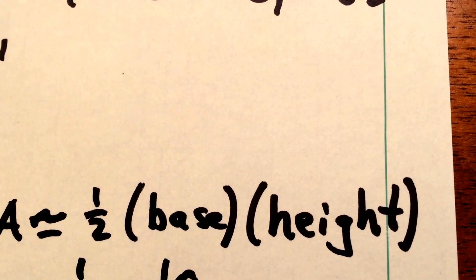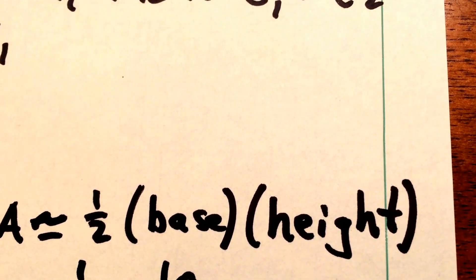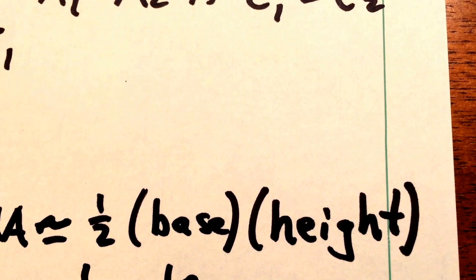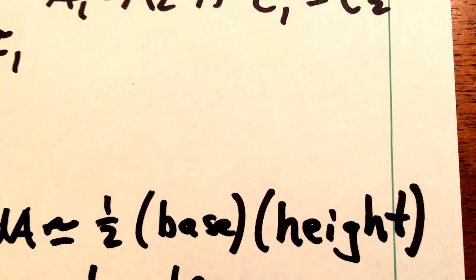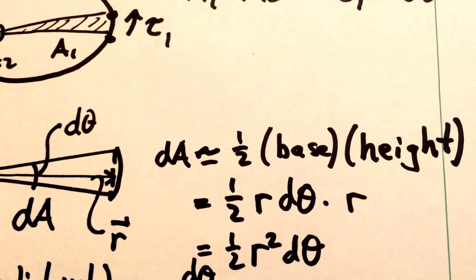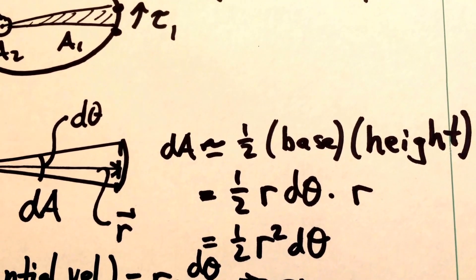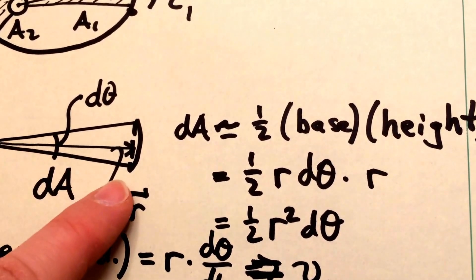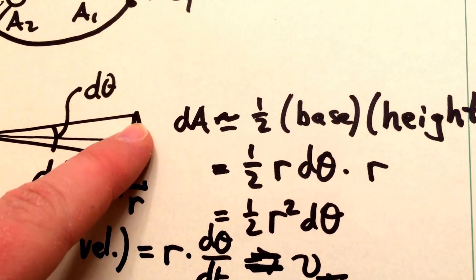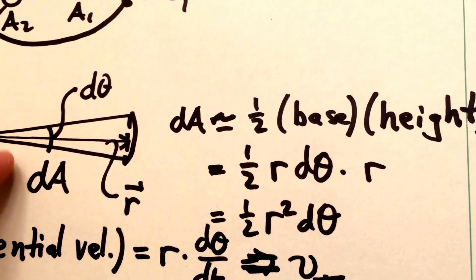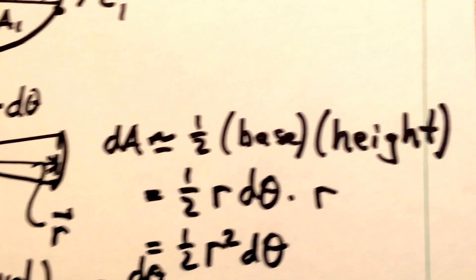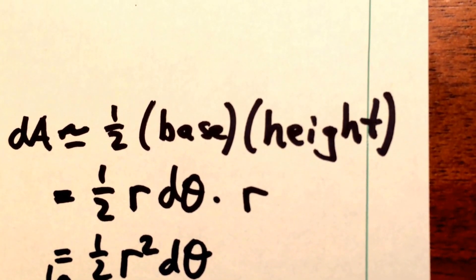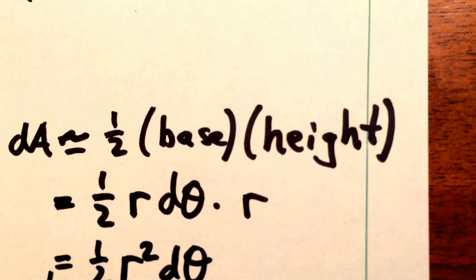Because that angle is so small we can treat the area as roughly equal to a triangle's area. The area of a triangle is one half base times height. In this case our base is just r times dθ, and the height is just the radius r. So the area of that triangle is going to be one half r dθ times r, or one half r squared dθ.